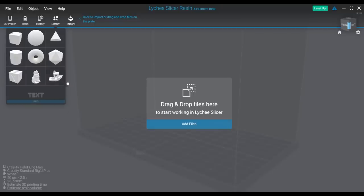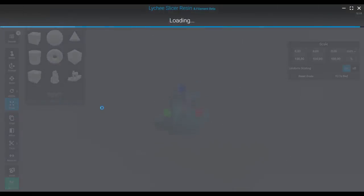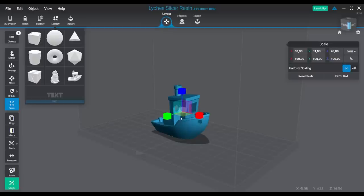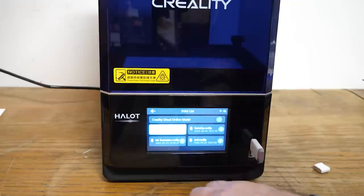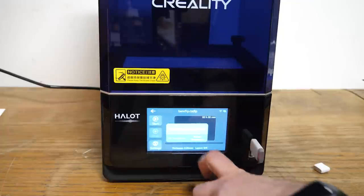I chose Lychee slicer because it seemed the most convenient for me. There is a free version, but for some functions you have to upgrade. I opted for a small banshee as my first print. The menu is easy to navigate and pretty clear, so here we go!